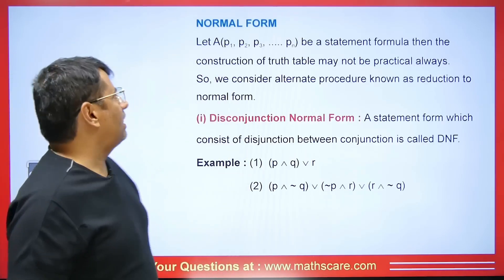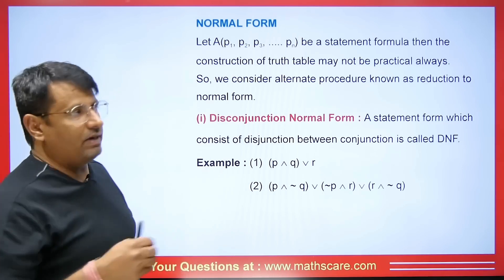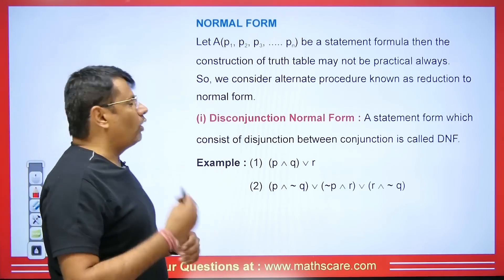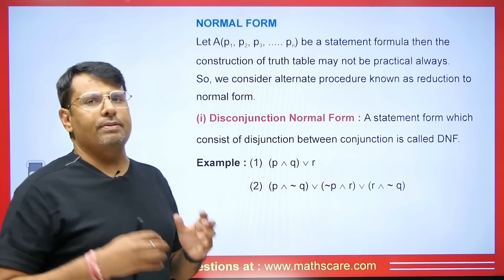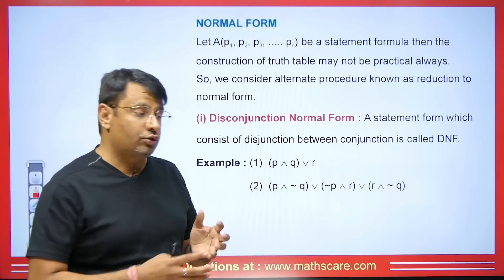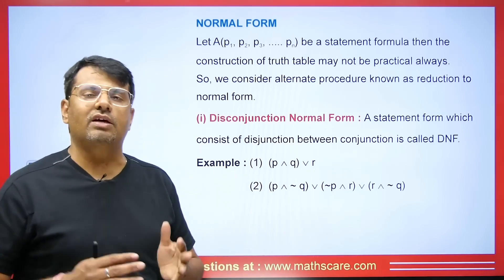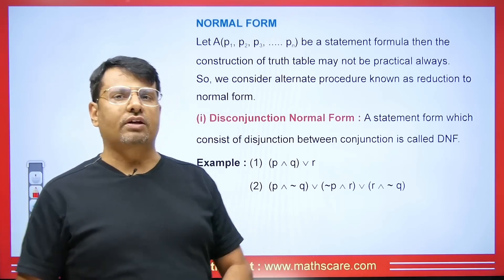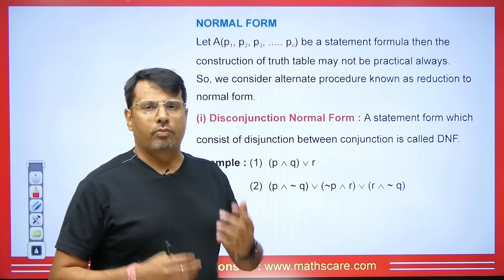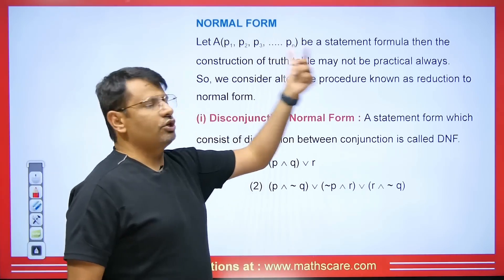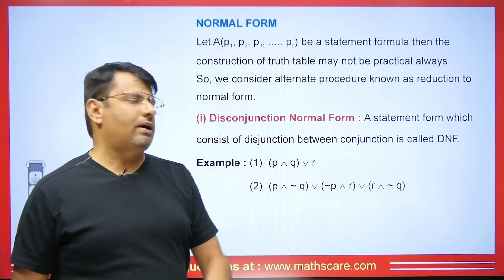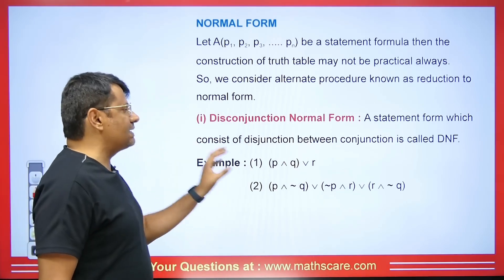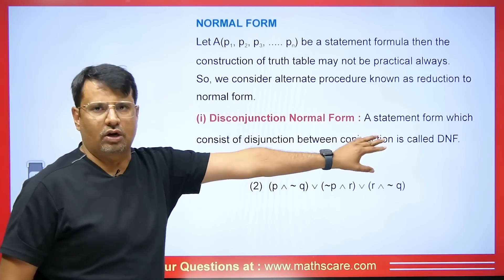Now we will talk about normal forms. If we have a statement formula p1, p2, ... pn, constructing the truth table may not always be practical — sometimes we have many statements and creating the truth table can be quite tricky. So we use an alternate process known as normal form. We have disjunction normal form, also known as DNF. A statement form which consists of disjunction between conjunctions is called DNF.